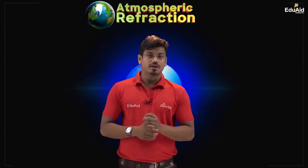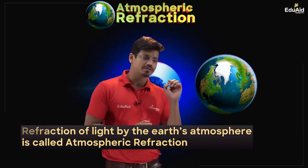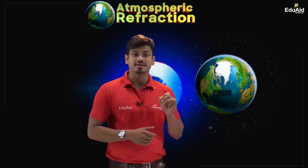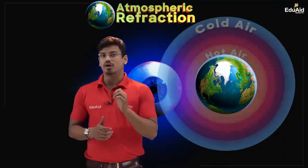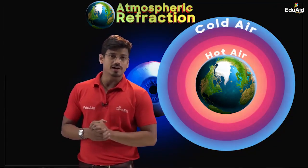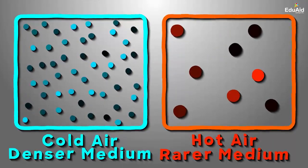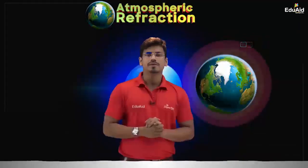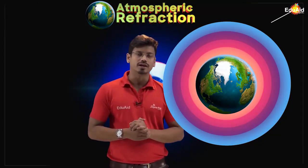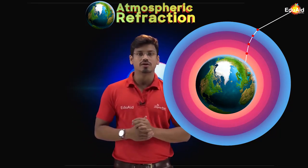What is atmospheric refraction? Refraction of light caused by the earth's atmosphere is called atmospheric refraction. In our earth's atmosphere there is air everywhere, but not all the air is at the same temperature. Some layers of air are hot and some are cold. Hotter layers serve as the optically rarer medium because air molecules are very loosely bounded. Cooler layers serve as the optically denser medium because air molecules are very tightly bounded. When light from a luminous or non-luminous body enters the earth's atmosphere, it undergoes refraction from these different layers, and this is called atmospheric refraction.